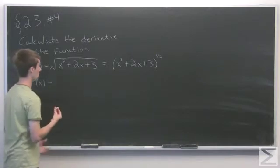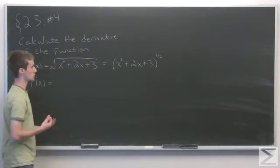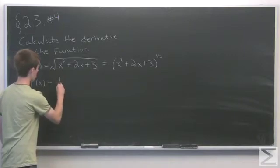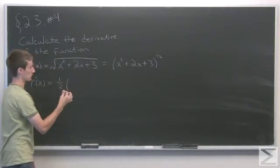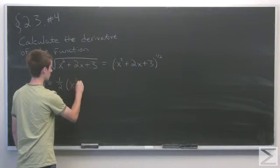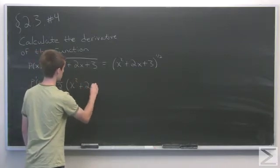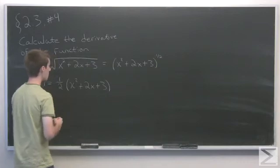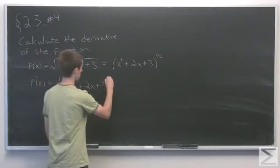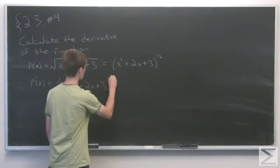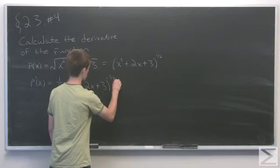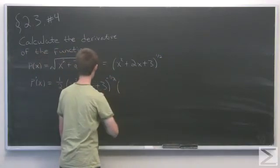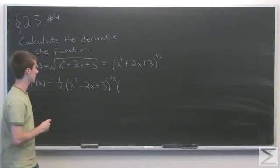First we take the derivative of the outside function, which is just the square root function. We'll have 1 half, and we leave the inside alone: x squared plus 2x plus 3. Then we lower the power by 1, so the exponent becomes negative 1 half. Now we need to multiply by the derivative of the inside.